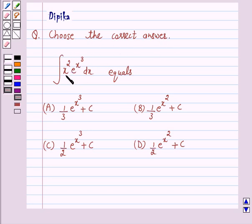Integral of x square into e raised to power x cube dx equals: (A) 1 by 3 e raised to power x cube plus c, (B) 1 by 3 e raised to power x cube plus c, (C) 1 by 2 e raised to power x cube plus c, and (D) 1 by 2 e raised to power x square plus c.